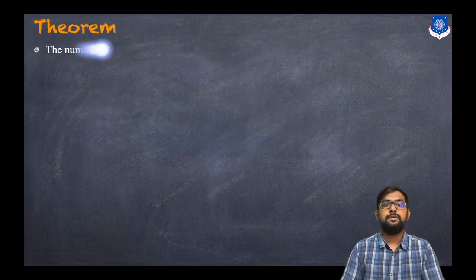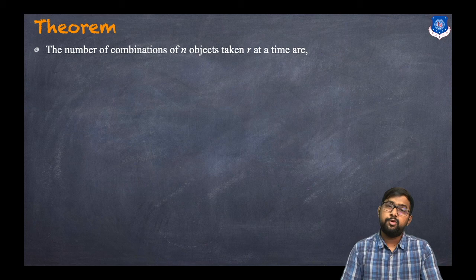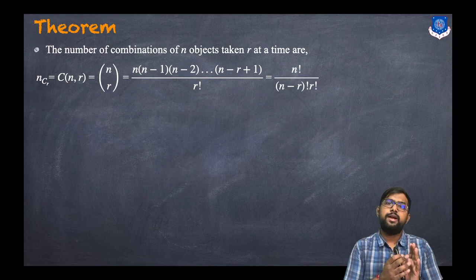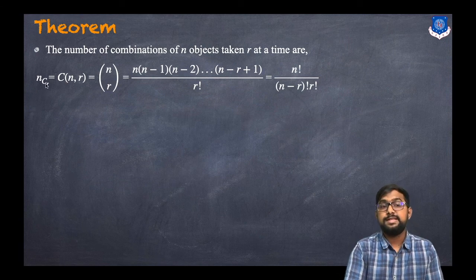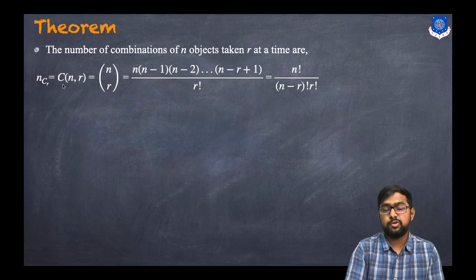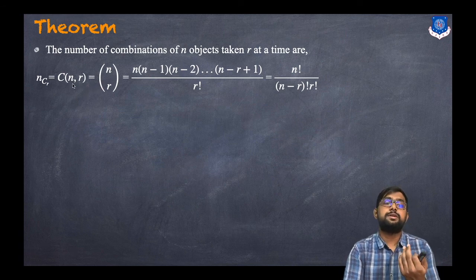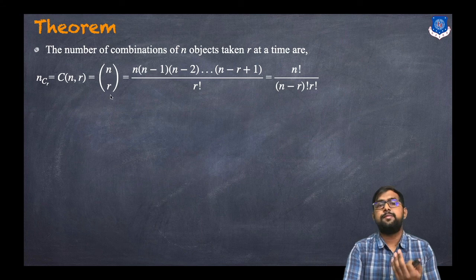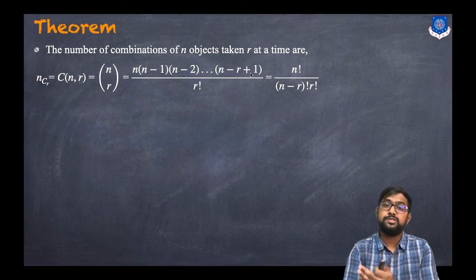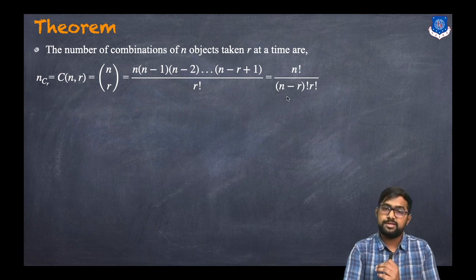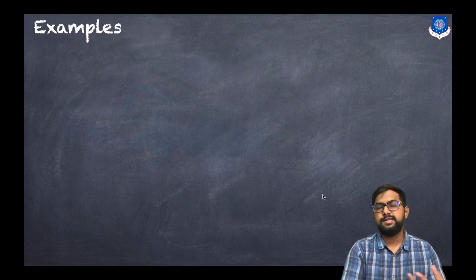Now let us discuss the theorem. The number of combinations of n objects taken r at a time is denoted nCr. Just as permutation uses nPr, combination uses nCr. The formula is: n(n−1)(n−2)···(n−r+1) divided by r factorial, which equals n factorial divided by (n−r) factorial times r factorial. This is an important formula we will use.